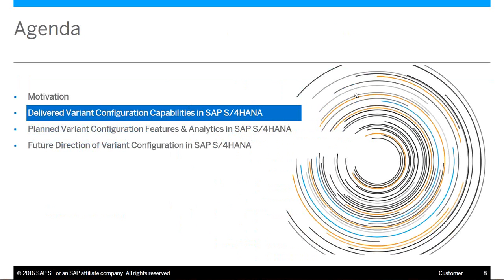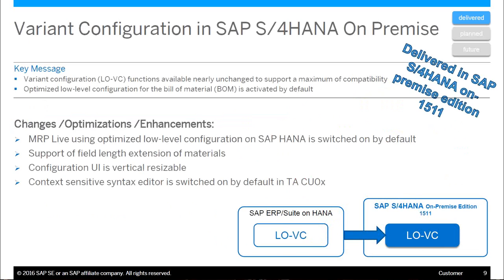Now I'd like to look at delivered variant configuration capabilities in S4 HANA today. The key message: variant configuration, LOVC as it's been known in the past, functions are available nearly identical to previous versions to support maximum compatibility from the past. Notice the term 'nearly' — there are some things that have changed and we'll address those.